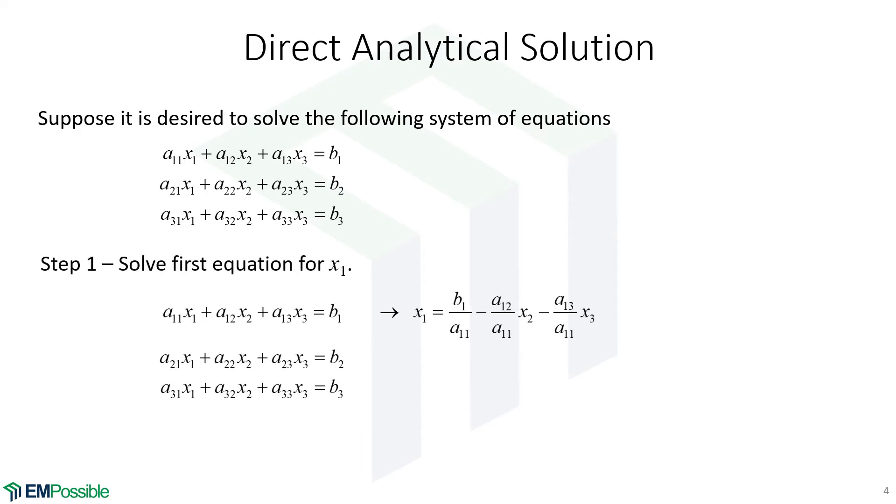So the very first thing we're going to do is look at this first equation and we're going to solve it for X1. When we do that, we end up with an equation of X1 in terms of X2 and X3. Now in our next step, we're going to take this expression for X1 and plug it into the second and third equations. When we do that, we will have eliminated X1 in these second two equations. So the second two equations will now only contain X2 and X3.